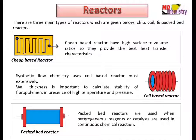The second type is the coil-based reactor. Synthetic flow chemistry uses coil-based reactors most extensively because they are cheap. They are prepared from fluoropolymers — PTFE, PFA — or stainless steel. Thickness is important to calculate the stability of fluoropolymers in the presence of high temperature and pressure. The third type is the packed bed reactor, used when heterogeneous reagents or catalysts are used in continuous chemical reactions. Columns are prepared from glass, stainless steel, or polymeric materials.